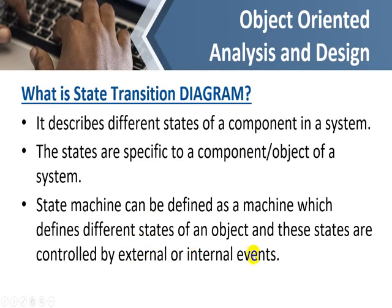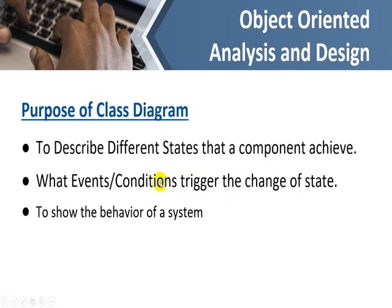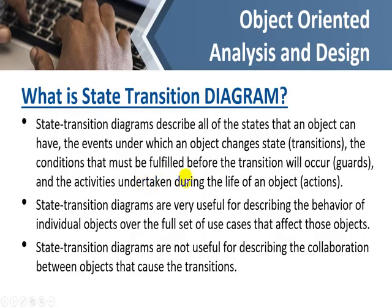For example, if I click something or if I turn on a machine, the software goes into another state. State transition diagram describes all of the states that an object can have, the events under which an object changes state, the conditions that must be fulfilled before the transition occurs (guard), and the activities undertaken during the life of an object (actions).